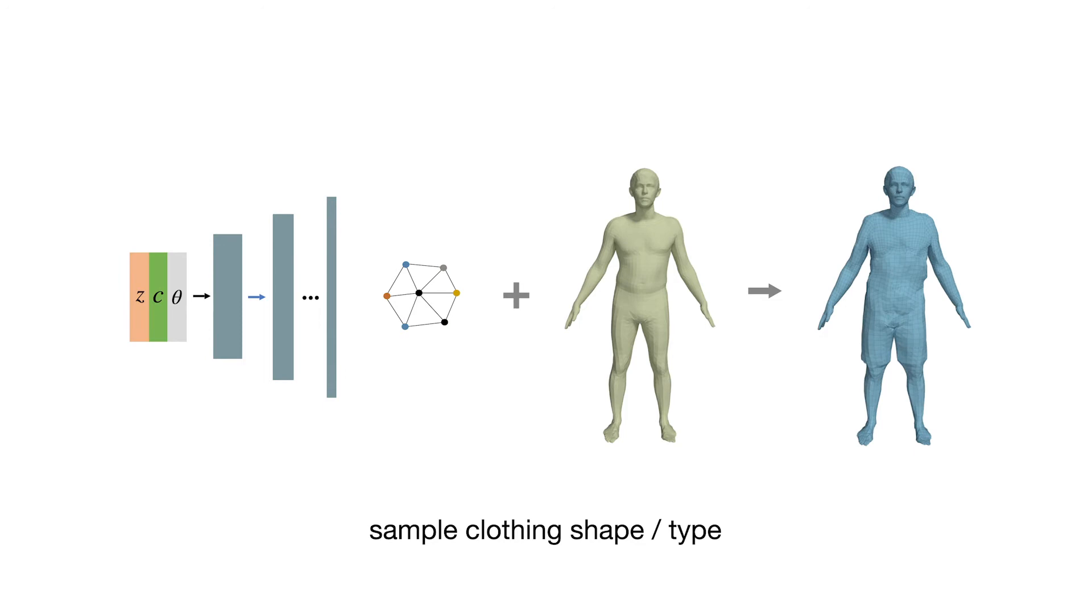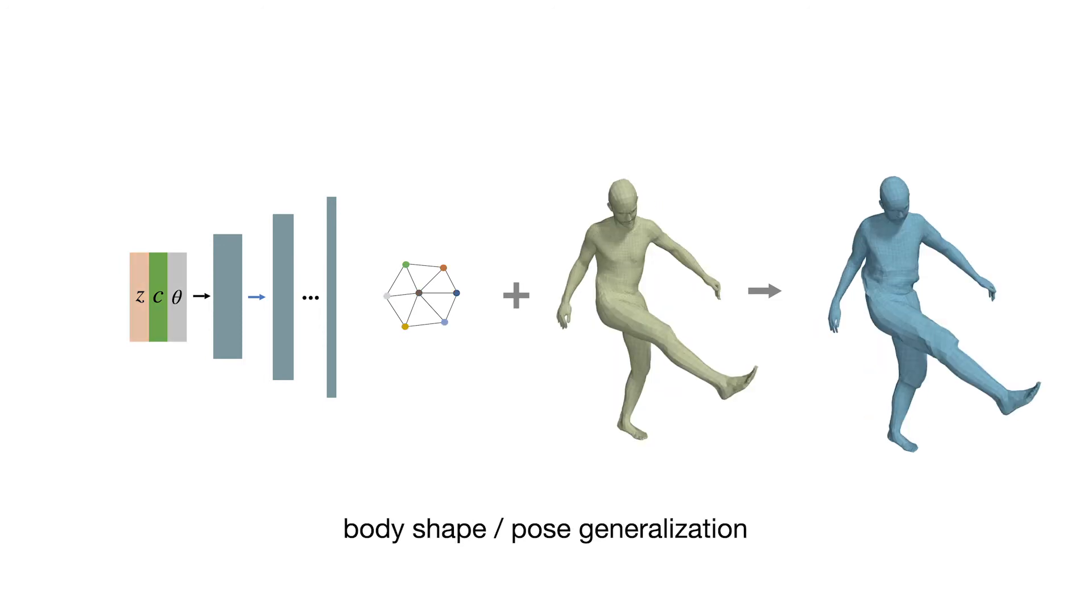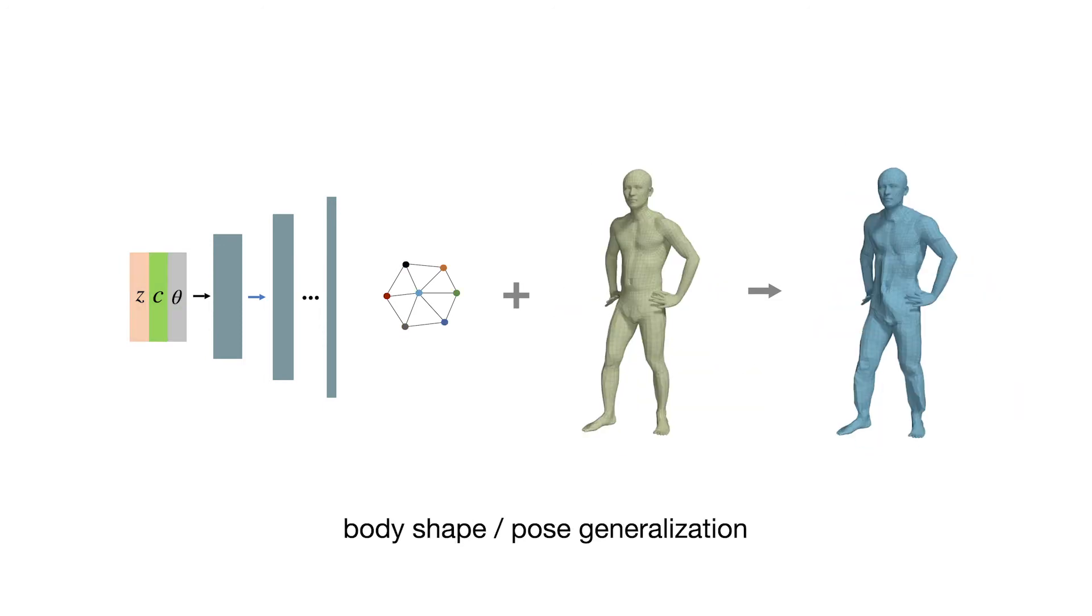By sampling the latent space, we can generate clothing of various types and styles that generalizes to different body shapes and poses.